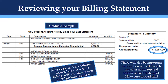This second example statement is of a graduate student billing statement which has a credit balance, versus the last statement example which had a balance due. A credit balance will be on a bill if you have enough financial aid estimated or dispersed that covers the tuition charges. In this example, the student is charged for tuition and their estimated aid covers the cost of tuition and leaves a credit available of $1,987.